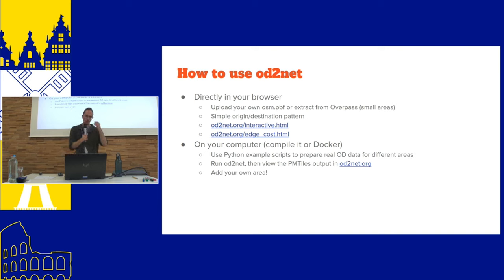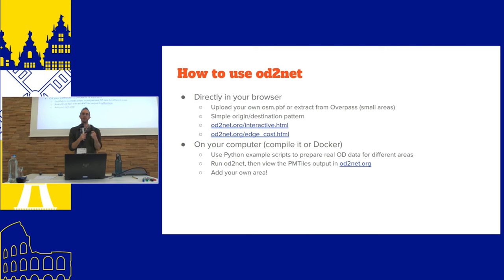You can use OD2NET a few different ways. The simplest is that it runs completely in your browser — you can import a small area from Overpass and play around. Later, you can install it, either compile from source in Rust or use a Docker container, and write your own data science scripts to extract origin-destination data and other needed inputs to get results.